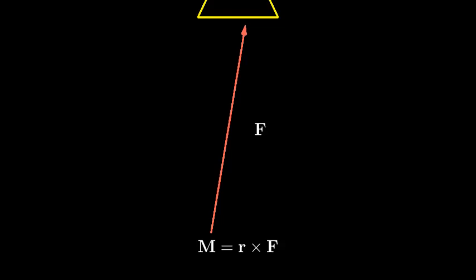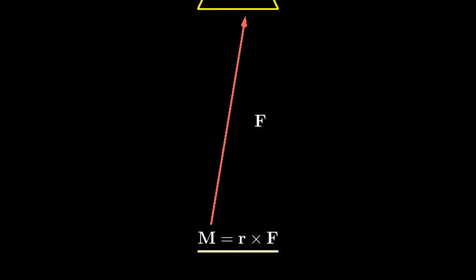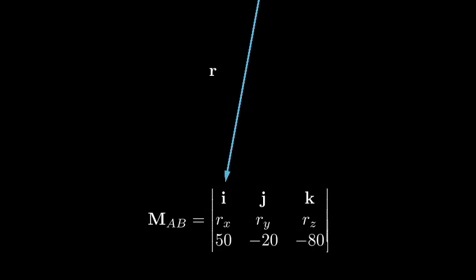Let's start with the moment about line AB. First, we need to find a position vector from point A to where the force acts. This gives us our r vector. Then we take the cross product of r with F.